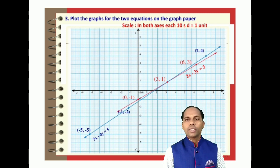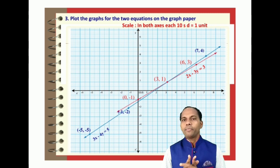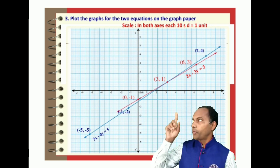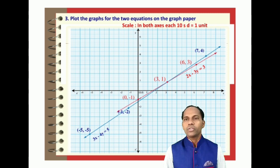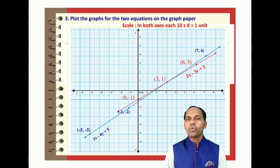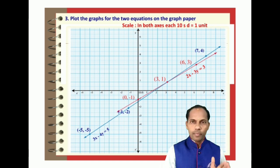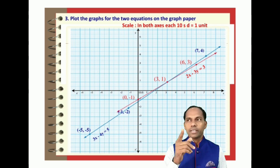For the second equation, the ordered pairs (-5, -5), (-1, -2), and (7, 4) are plotted, joined to form a straight line labeled 3x - 4y = 5. The two graphs of the pair of linear equations intersect at one point, and that point is the solution.